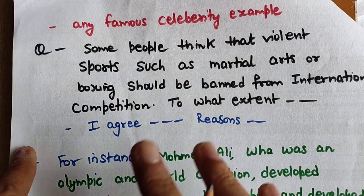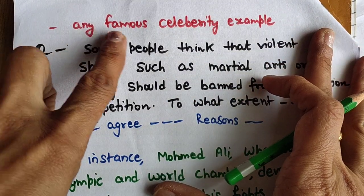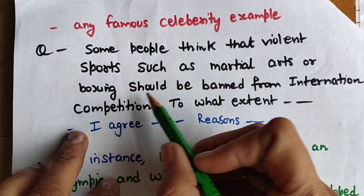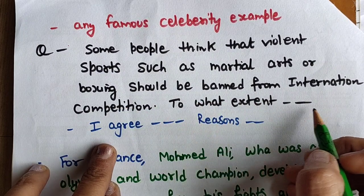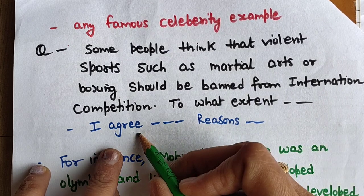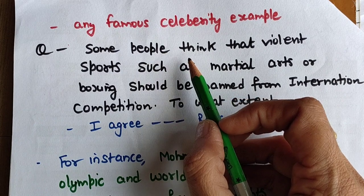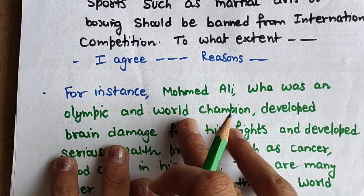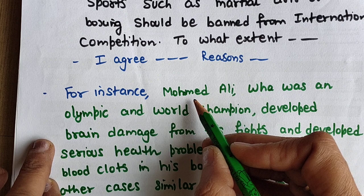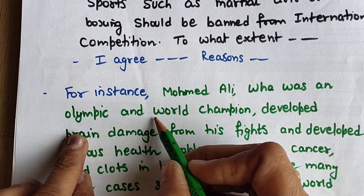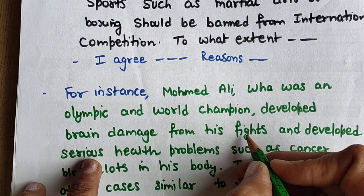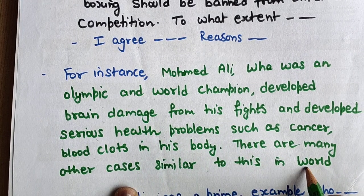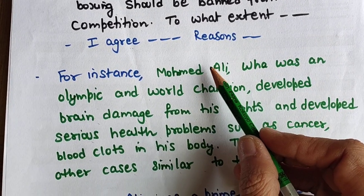Now, the last type: the famous celebrity example. Suppose the question says: 'Some people think that violent sports such as martial arts or boxing should be banned from international competition. To what extent do you agree or disagree?' If you agree, an example could be: 'For instance, Muhammad Ali, who was an Olympic and world champion, developed brain damage from his fights and developed serious health concerns such as cancer and blood clots in his body and brain. There are many other similar cases in the world.'